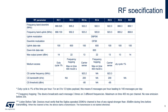Duty cycle is 1% of the time per hour. For 8 to 12 bytes payload, this means 6 messages per hour, leading to 140 messages per day. Regarding frequency hopping, the device broadcasts each message 3 times on 3 different frequencies, with a maximum on-time of 400 ms per channel and no new emission before 20 seconds. For listen before talk (LBT), devices must verify that the Sigfox-operated 200 kHz channel is free of any signal stronger than -80 dBm during 5 ms before transmitting. When the channel is free, the device starts a transmission; otherwise the transmission is not started.